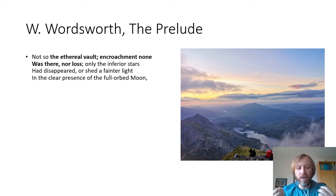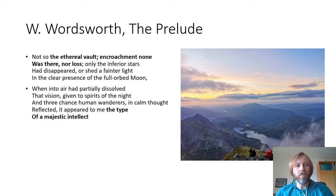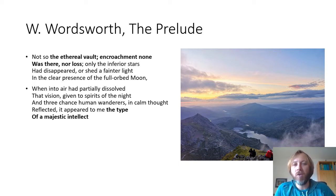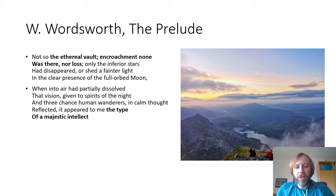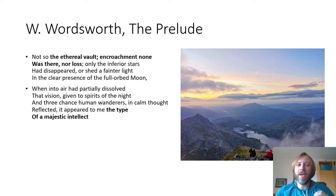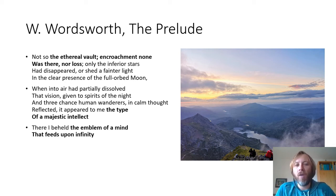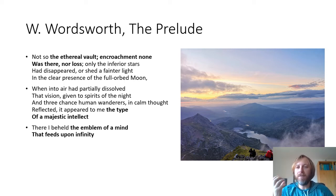Then he starts thinking: what is the significance of this after it's gone? 'When into air had partially dissolved that vision given to spirits of the night, and three chance human wanderers, in calm thought reflected, it appeared to me the type of a majestic intellect.' So now he thinks: what did that mean? And he says, this is almost like the mind. 'There I beheld the emblem of a mind that feeds upon infinity' — as he calls it here.